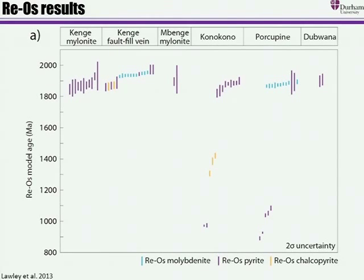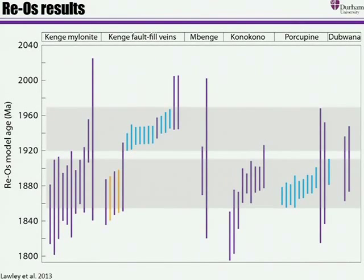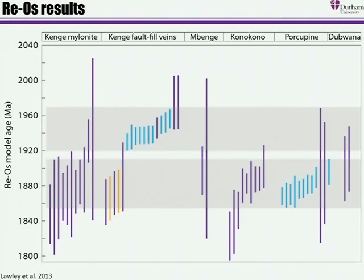What we can do instead is reanalyze those with a different spike and treat them like molybdenites — essentially ignoring the common osmium and calculating model ages. This plot shows over 70 individual model age analyses for the five deposits. The purple are pyrite ages, yellow are chalcopyrite, and blue is molybdenite. Zooming in on the Paleoproterozoic, at Kengi — the big deposit shown on the first slide — the disseminated pyrite is slightly older than the stylolites. But critically, the mylonitic shear zone that hosts those fault-fill veins dates to much younger at 1880 Ma, and some of the pyrite and chalcopyrite within those fault-fill veins is the same age as the mylonite. These systems have really long-lived histories, going from 1950 Ma to this younger mylonitization event.